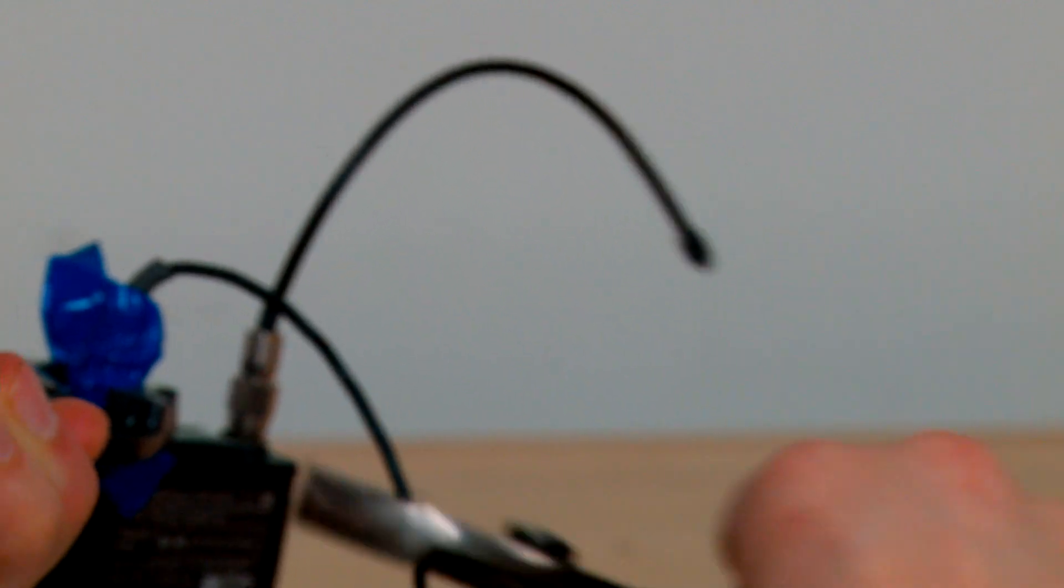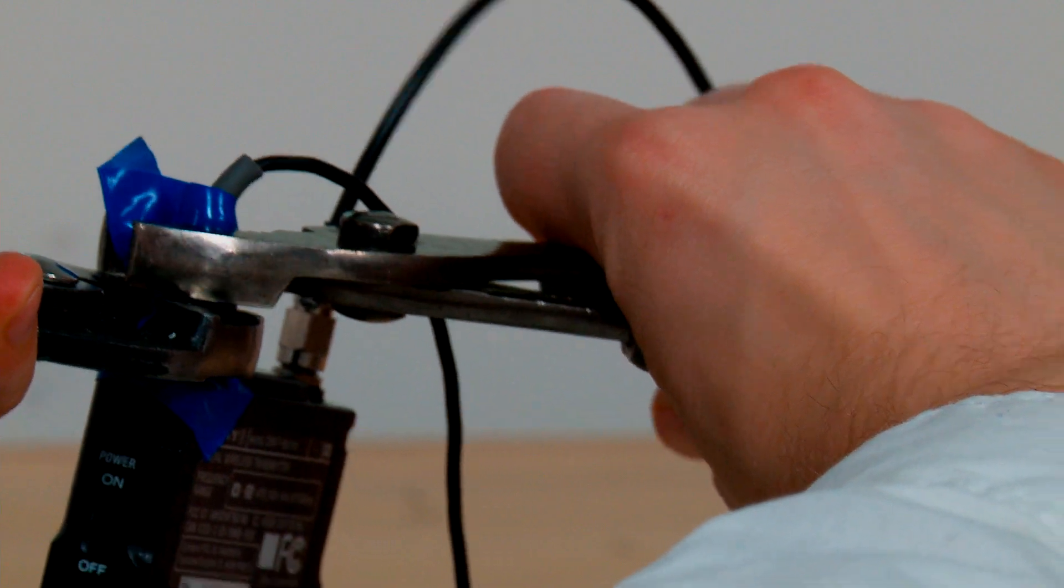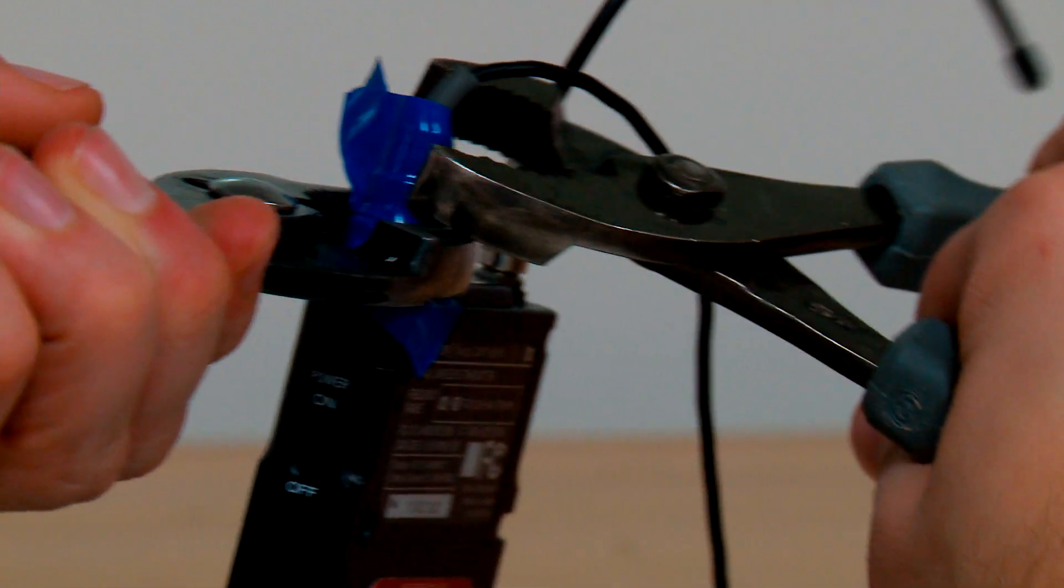Before trying to loosen those sections, I put on some electrical tape over top of them in an attempt to not scuff off that black paint.